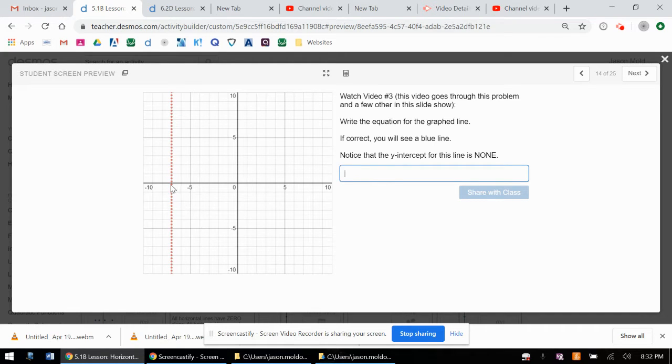So this is that weird one that, even though it goes up and down, it's going to be x equals. And I'm going to look that this is actually at negative 7. So x equals negative 7, and I get that confirmation that that is correct.